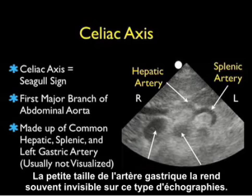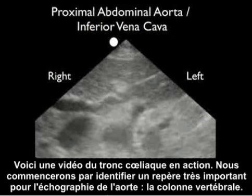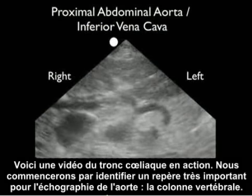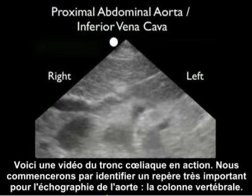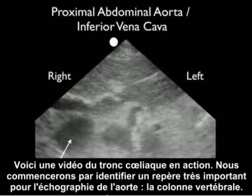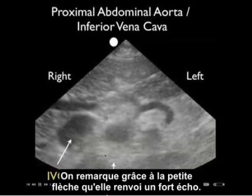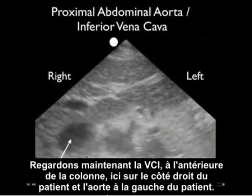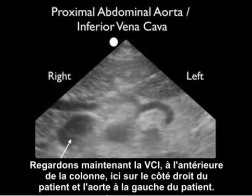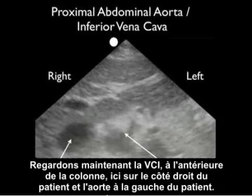The left gastric artery is usually very small and not visualized well on bedside ultrasound. In this video clip of the celiac axis, we begin by identifying our first very important landmark for bedside ultrasound of the aorta: the spine. Notice it has a hyperechoic, or bright, signature as shown by the indicator arrow. Just anterior to the spine, we look for the IVC to the patient's right and the aorta to the patient's left.